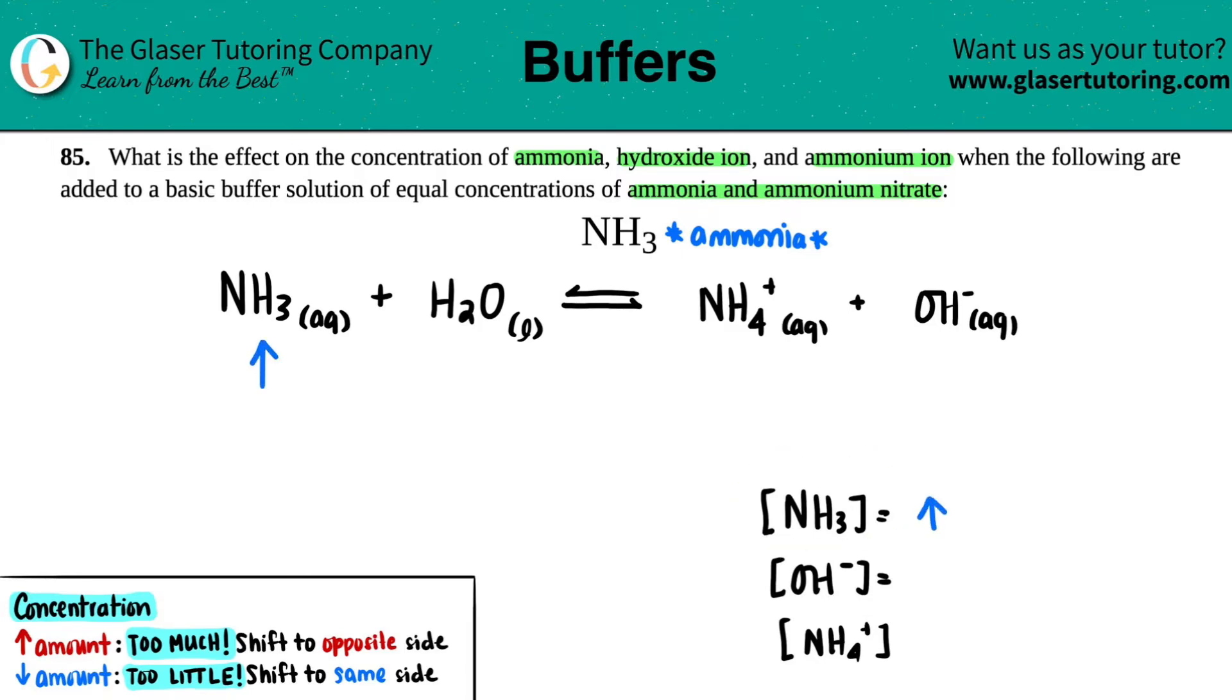Now we use Le Chatelier's principle for the rest. If you increase anything—in this case we have too much ammonia—you will always shift to the opposite side. If you increase your reactants, you will shift to the product side.